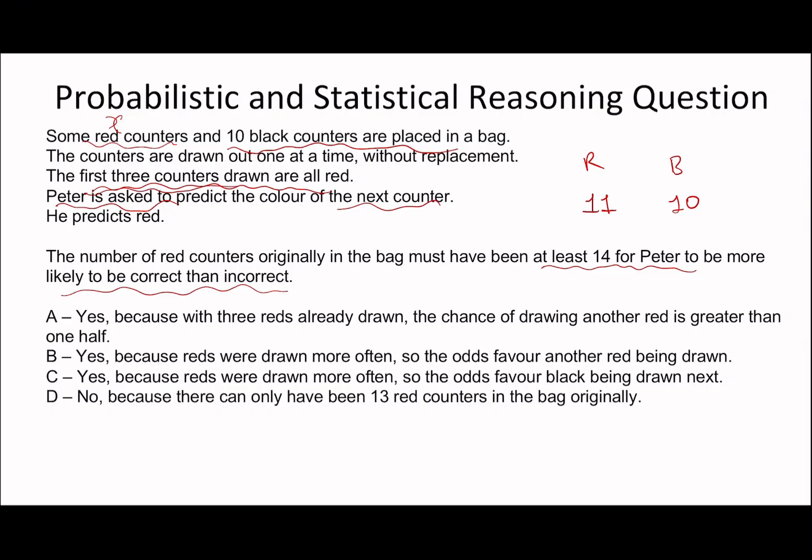If he's already pulled out three red counters, that means originally there must have been at least 14. So this statement, I would agree, yes.